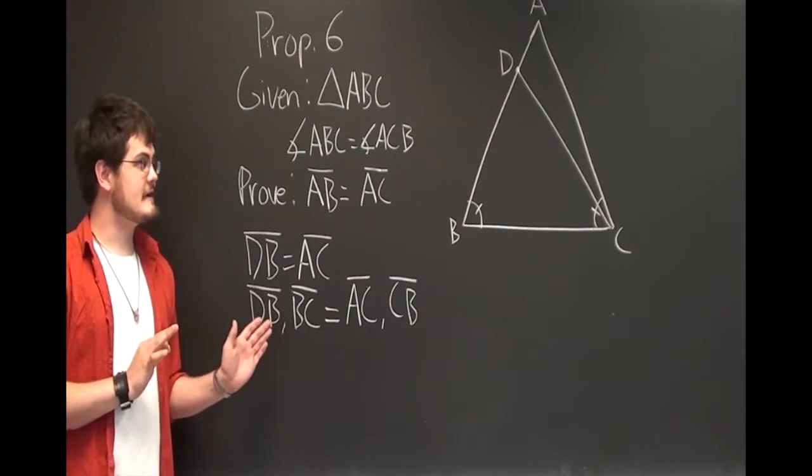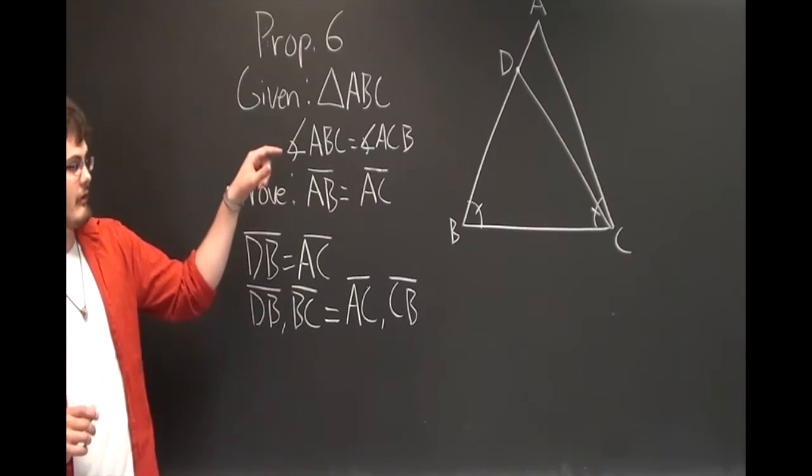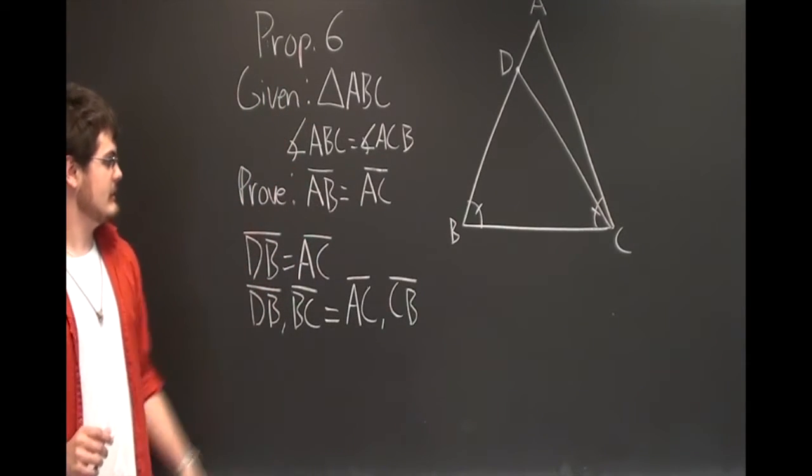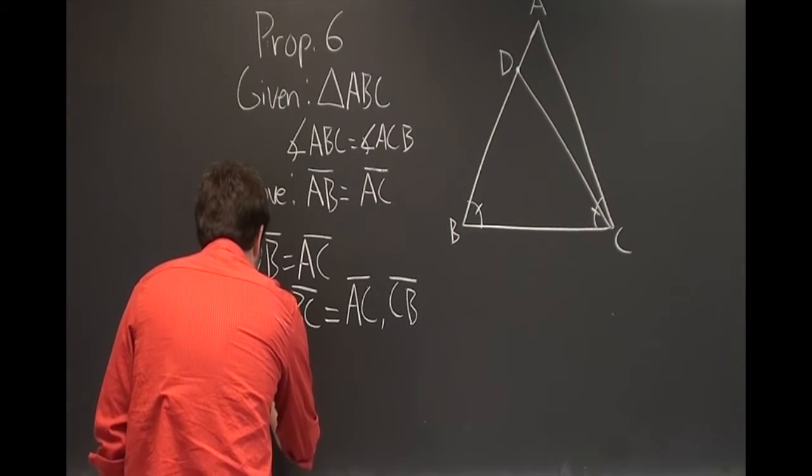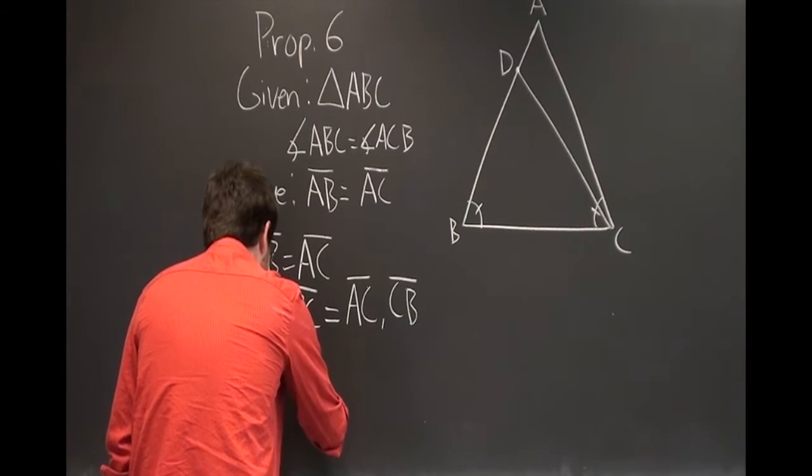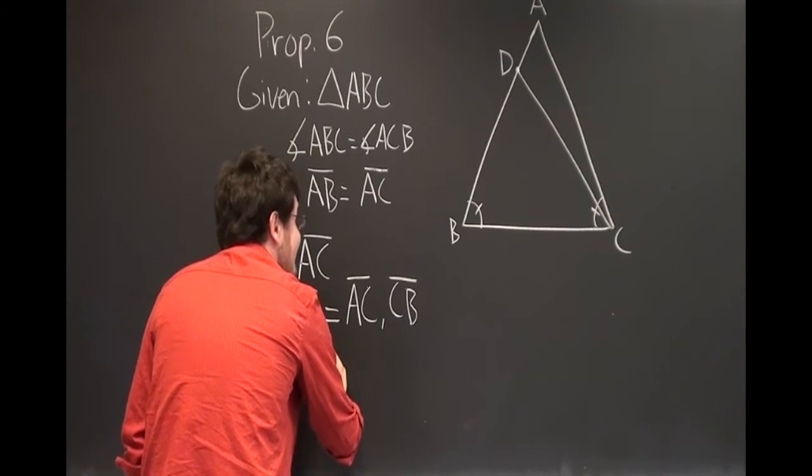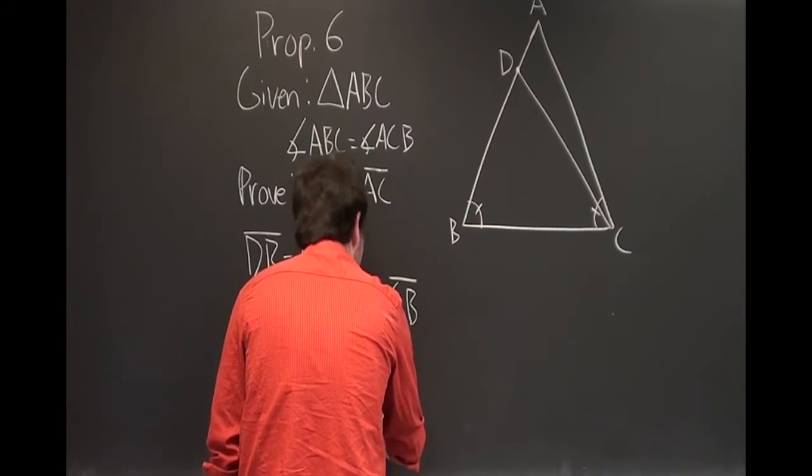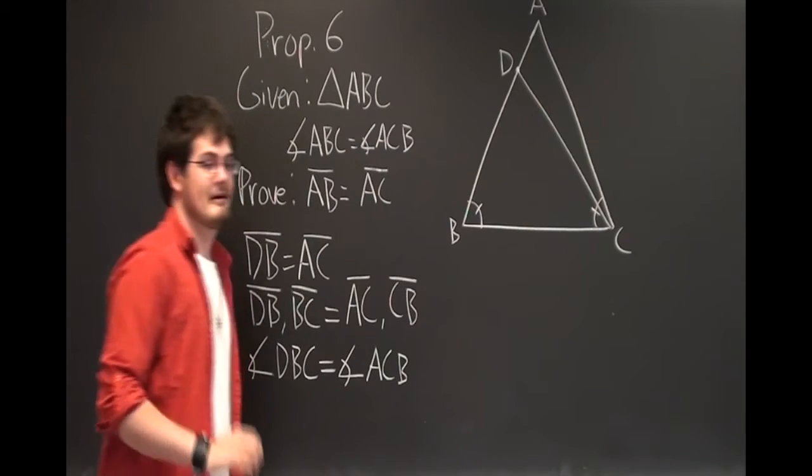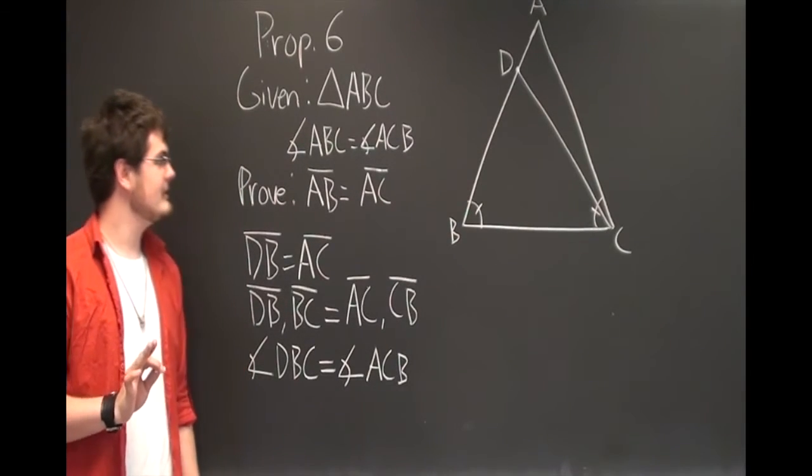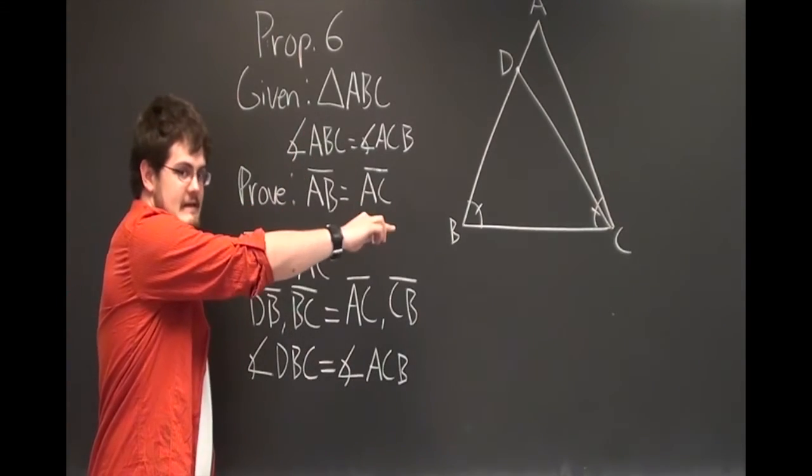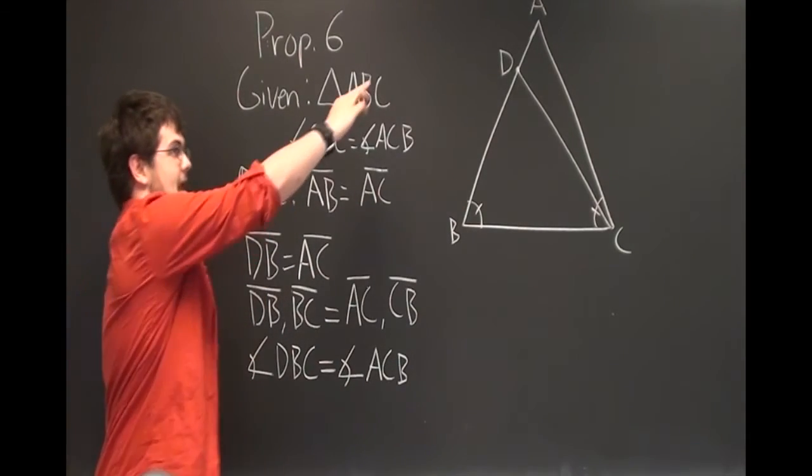What does that tell us? That tells us that the angle DBC is equal to the angle ACB. So what does that mean? That means that the base DC is equal to the base AB.